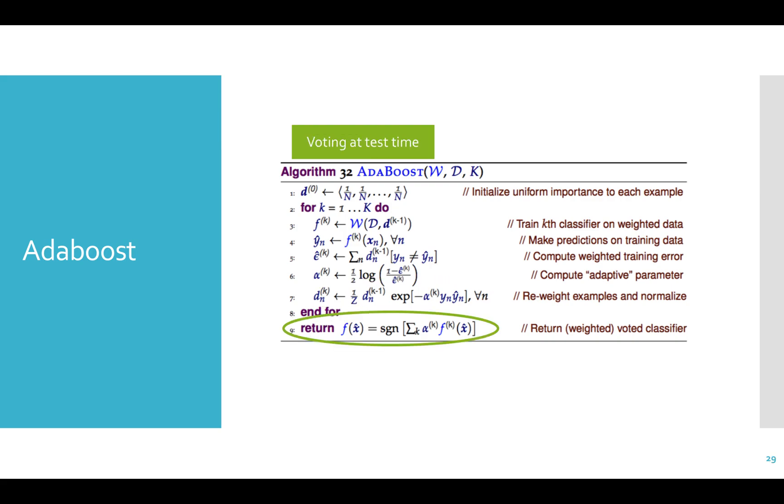We end our for loop and now we have completed AdaBoost and we need to make a prediction on a test sample x hat. We run it through all of our trained classifiers and weight the predictions by our alphas. We take the sign of the sum over all weak learner models to produce a final classification.